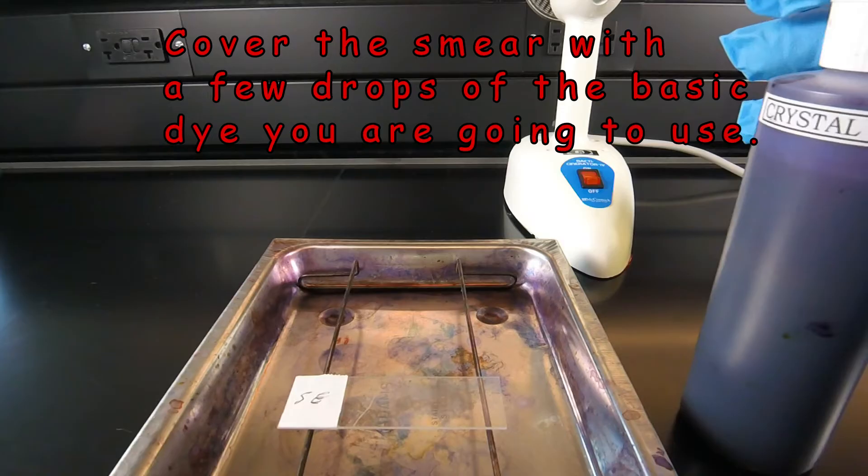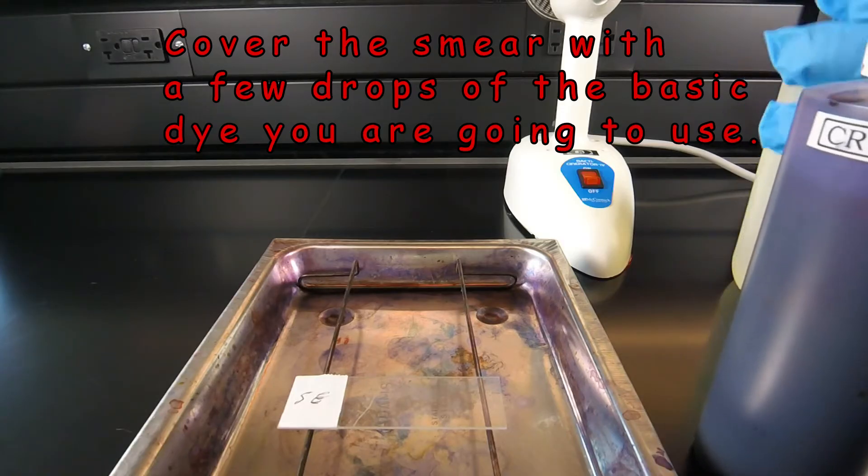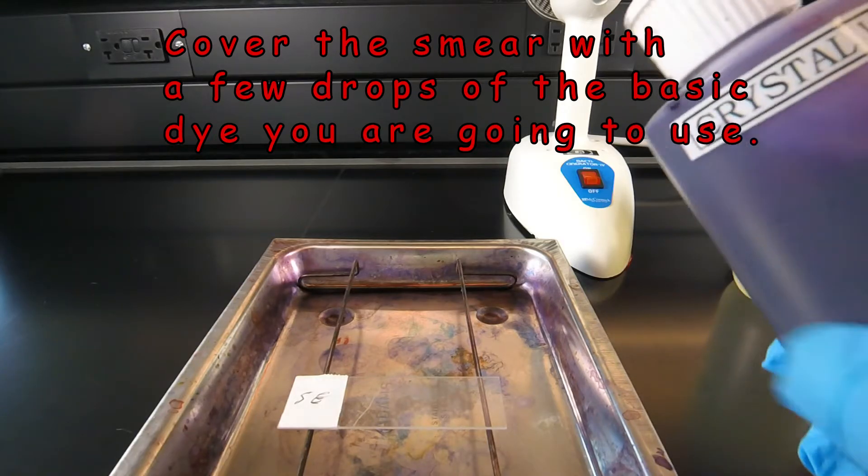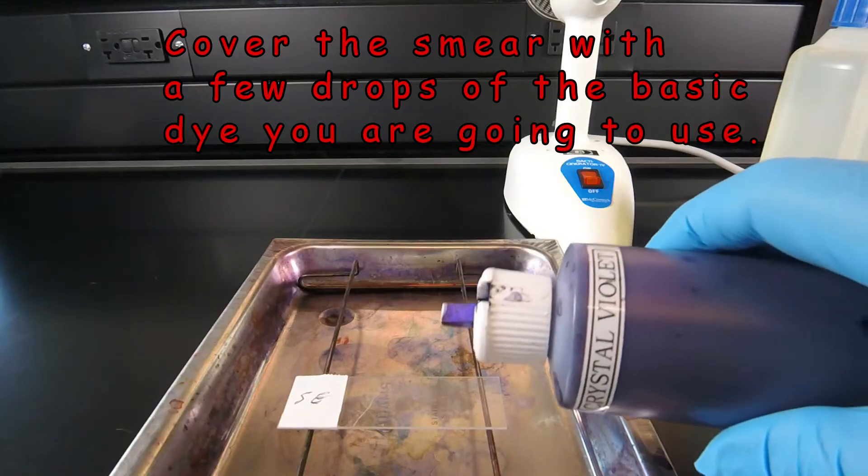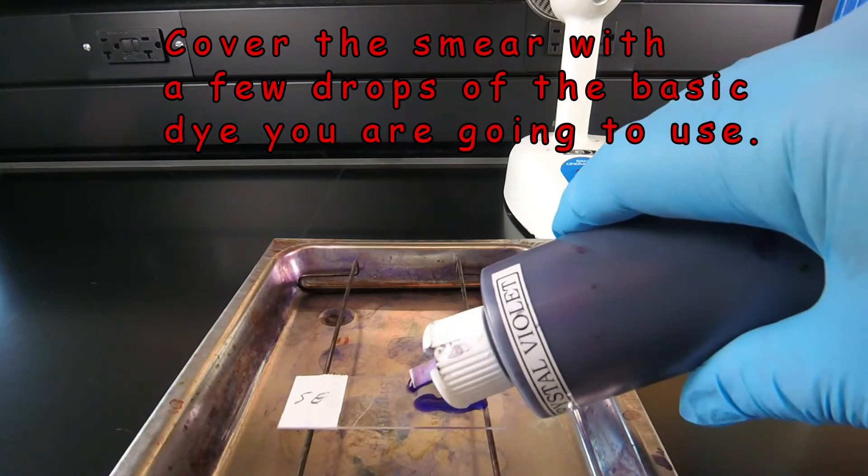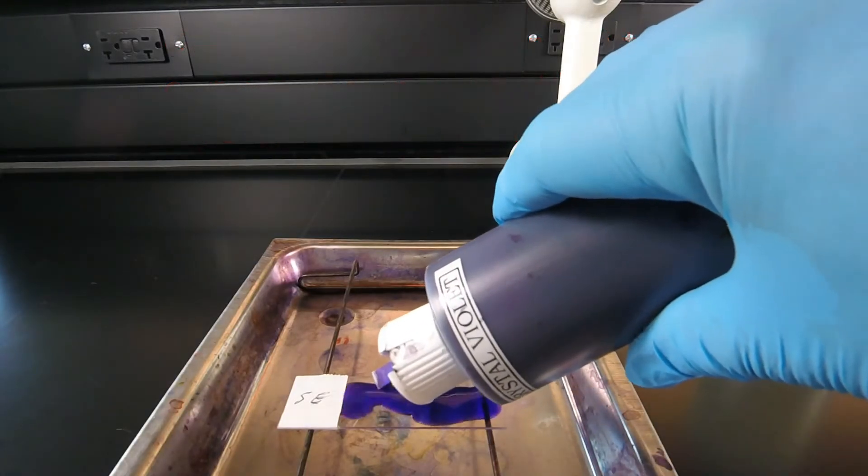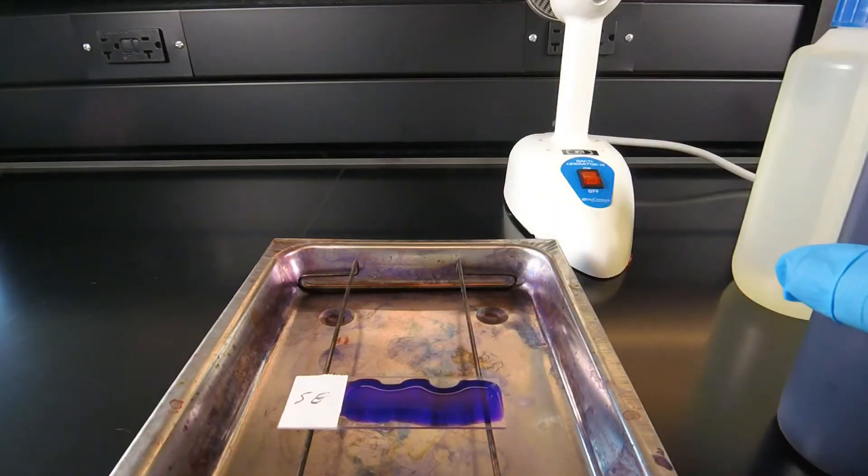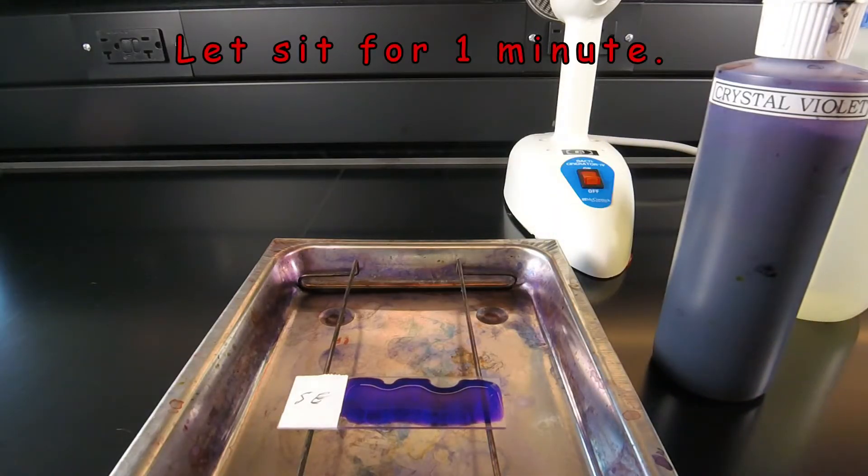We're going to take some crystal violet, a basic dye that gives us a direct stain, and add enough dye to cover a good portion of the smear. Now we're going to leave the crystal violet on for one minute.